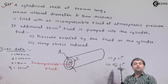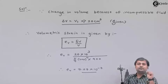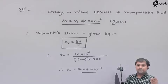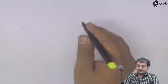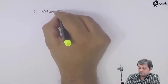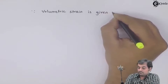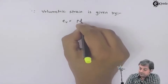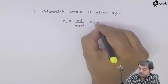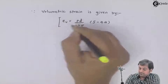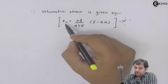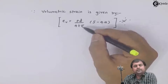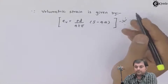Now once we have got volumetric strain, let us address the first question — calculating internal pressure developed. Remember, here I am writing an empirical formula that gives the relation between volumetric strain and internal pressure; this is very important for this problem. The empirical formula is: volumetric strain equals PD upon 4TE into the bracket 5 minus 4 mu.